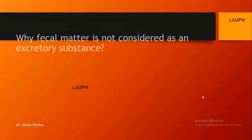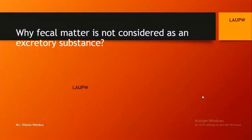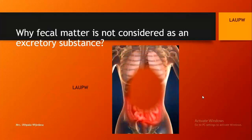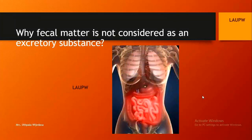Why don't we consider fecal matter as an excretory product? The reason is that fecal matter consists of undigested materials from food digestion. Digestion is not a biochemical reaction that takes place in cells. Therefore, we do not consider fecal matter as an excretory product.